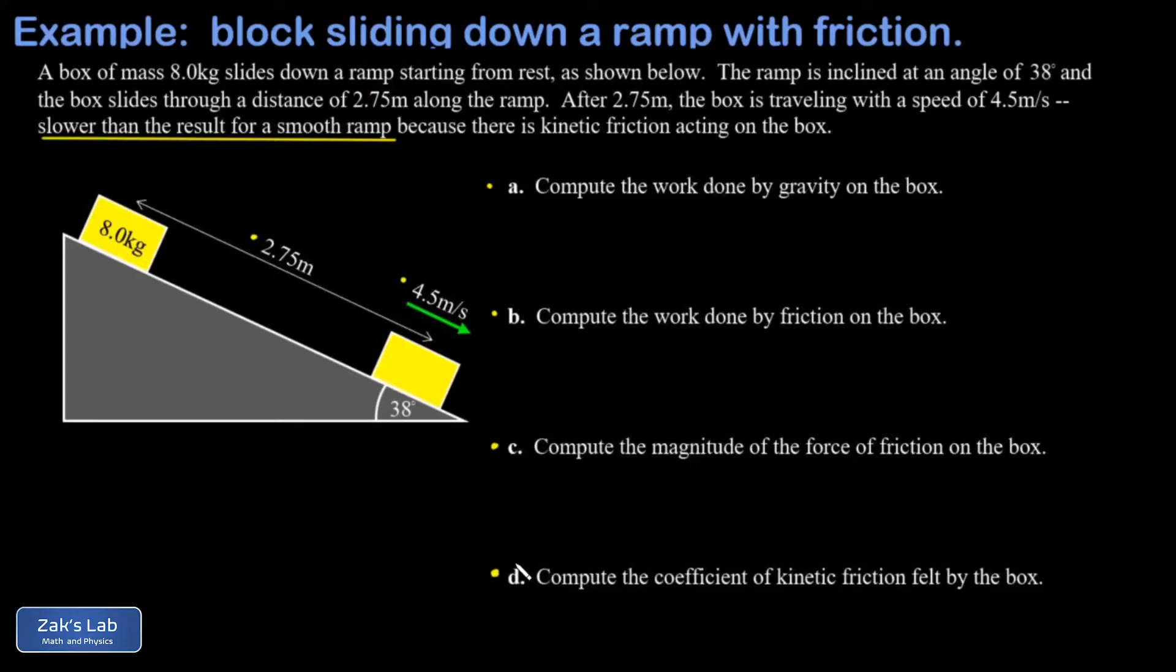Let's start with part a: find the work done by gravity on the box. I'm going to approach this somewhat formally. Here's just a quick reminder: the work done by any conservative force is given by the negative of the change in potential energy, and I'll post a link to the video where this was first derived.